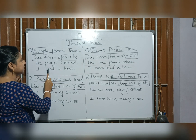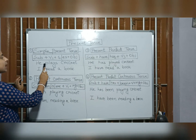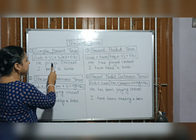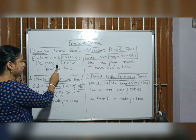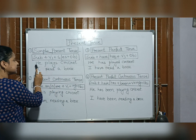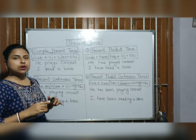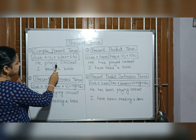Example: I read a book. He plays — here 'he' is the subject, and 'plays' uses V1 with an 's' added because 'he' is the third person singular number.